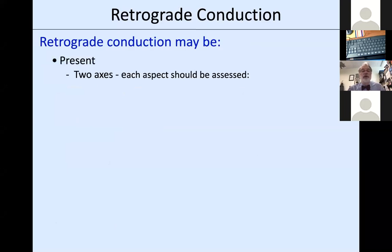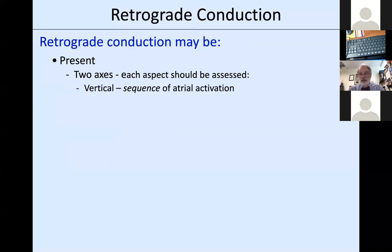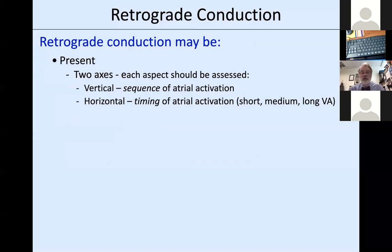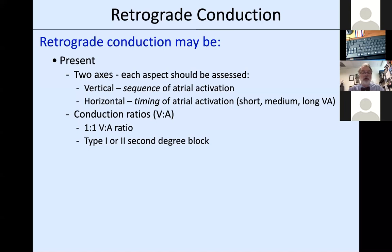We have several tools: the ECG at the top of our tracings, His bundle recordings with presence or absence of a His potential, and the effect of premature ventricular complexes or ventricular pacing on subsequent PR or AH intervals. Even if you don't see a His, you can infer a lot about the retrograde conduction system by seeing what happens to the PR or AH interval of subsequent beats.